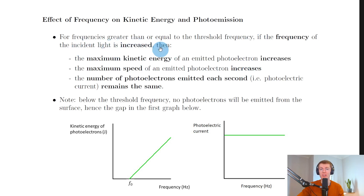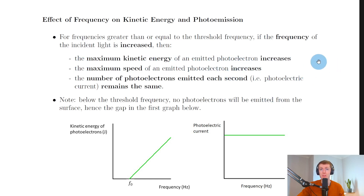For frequencies greater than or equal to the threshold frequency, if the frequency of the incident light is increased, then the maximum kinetic energy of an emitted photoelectron also increases. By increasing the frequency of the incident photons, the maximum kinetic energy that the electrons will have when ejected from the metal surface will be greater. And because we have an equation that relates kinetic energy and speed — EK equals a half mv squared — kinetic energy is directly proportional to speed squared. So if maximum kinetic energy increases, then the maximum speed of the ejected electrons must also increase.